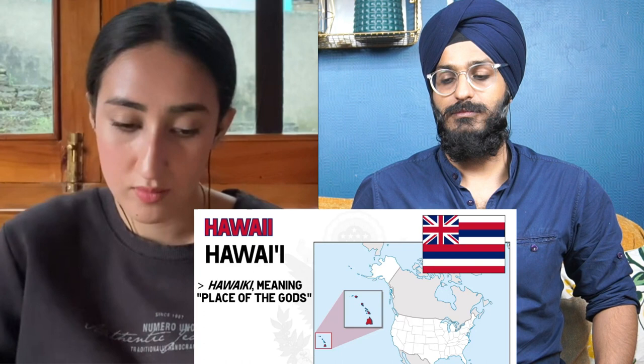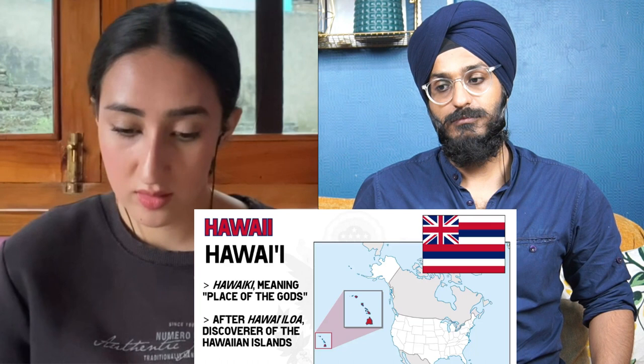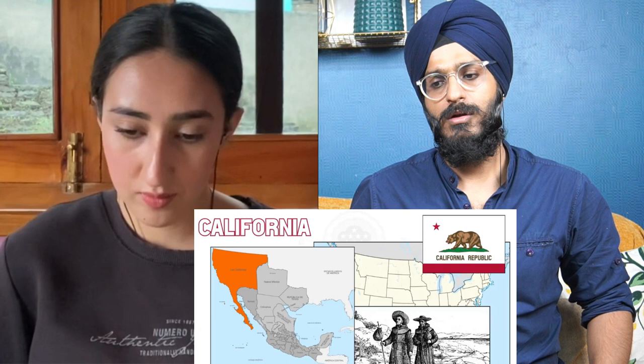Hawaii's name origin is less certain. The first registered usage was in 1879. There are two hypotheses: one is it coming from 'Hawaiiki,' meaning 'place of the gods' — the mythological homeland of the Polynesians — and the other is it being named after Hawaii Loa, a legendary discoverer of the Hawaiian islands. Moving to the continental US, California got its name from Spanish explorers choosing 'Las Californias.'